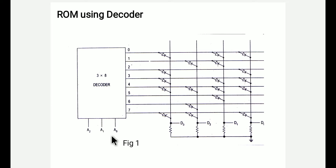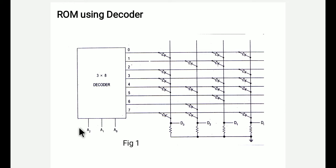The inputs are A0, A1, A2 — that is 3 input lines. The outputs are 0, 1, 2, 3, 4, 5, 6, 7 — that is 8 output lines. So it is a 3-to-8 decoder. The input combinations go from 000 to 111, giving 8 combinations corresponding to rows 0 through 7.